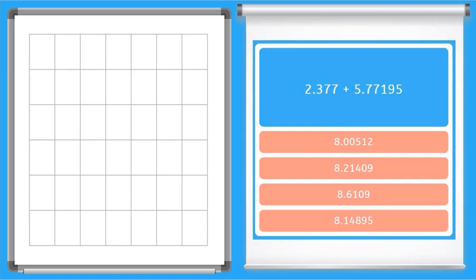Okay, last one. And this is where you really see that it is important to line up the decimal correctly. Look how many digits are back here on this second one. So okay, the first one, 2.377 plus 5.77195. Whew, that's a long one.